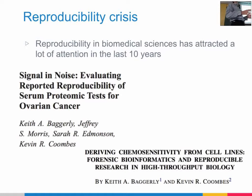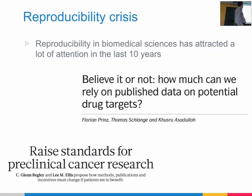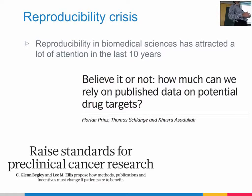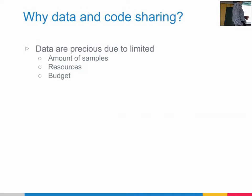Maybe you know Kevin Kumbes and Keith Baggerly — I call them the Robin Hoods of bioinformatics because they actually dug very deep into some papers and found evidence of misconduct. The problem with those papers is that they were using the findings in clinical trials. So at the end of the day, this is not just about science, it's about the patients as well. In biomedical science and pre-clinical research, there is also a lot of crisis because we use model systems that we badly, wrongly characterize.